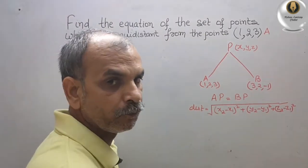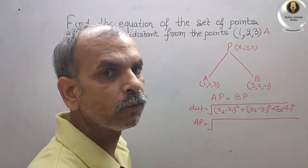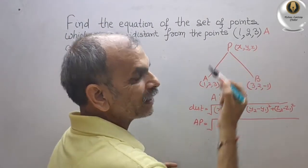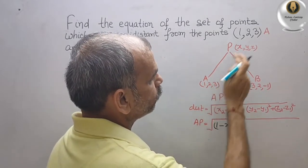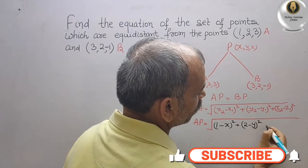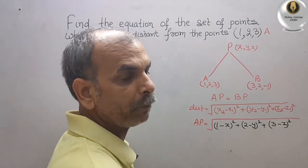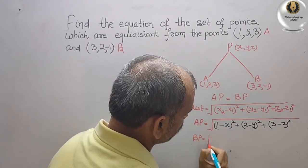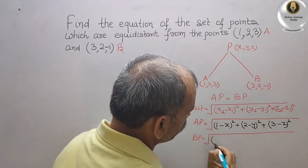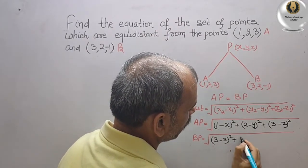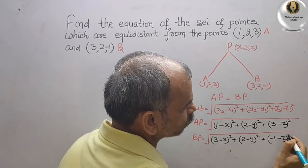First we go for AP. AP is equal to root under (1 minus x) whole square plus (2 minus y) whole square plus (3 minus z) whole square. Now we write for BP: BP is equal to root under (3 minus x) whole square plus (2 minus y) whole square plus (-1 minus z) whole square.